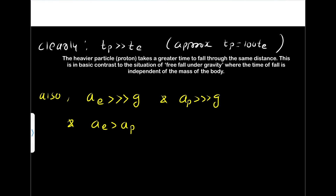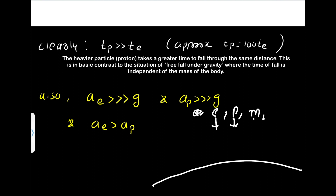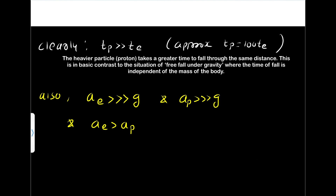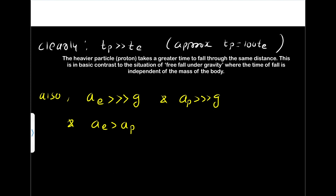This is in basic contrast to the situation of free fall under gravity, where the acceleration due to gravity is independent of the mass of the falling object. Whether it is an electron, a proton, a man, or anything else, near Earth they all accelerate at 9.8 meter per second squared regardless of mass. Notably, the acceleration of the electron in the electric field is very much larger than the acceleration due to gravity, the acceleration of the proton is also much larger than g, and the acceleration of the electron is very large compared to the acceleration of the proton.